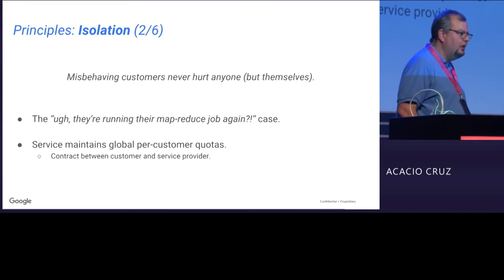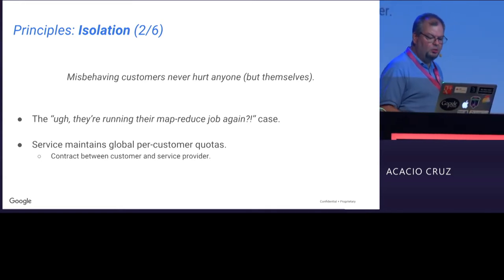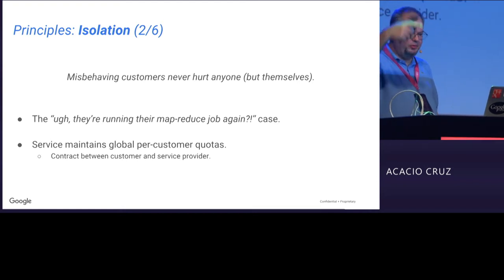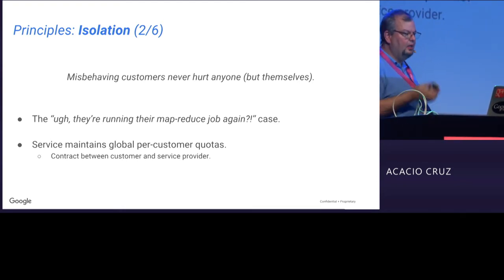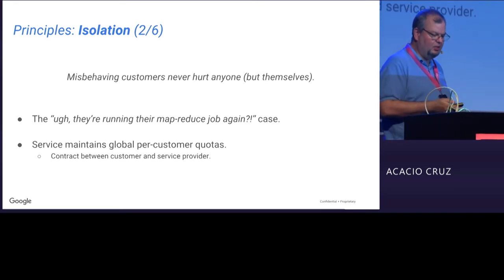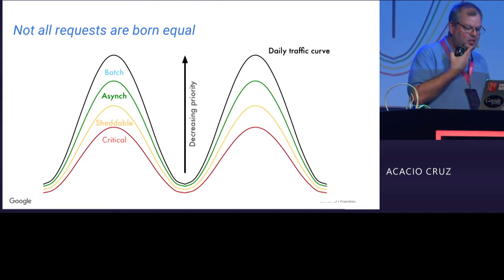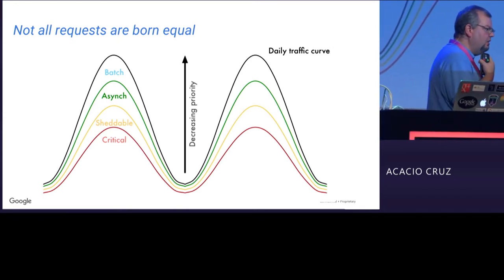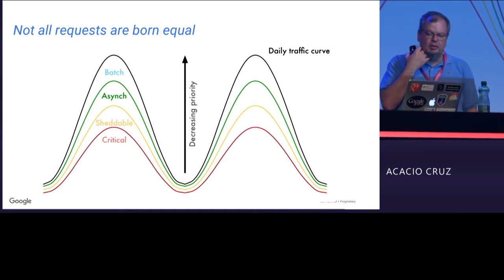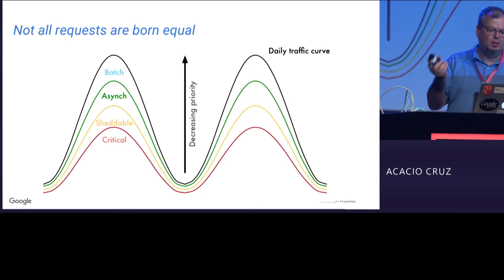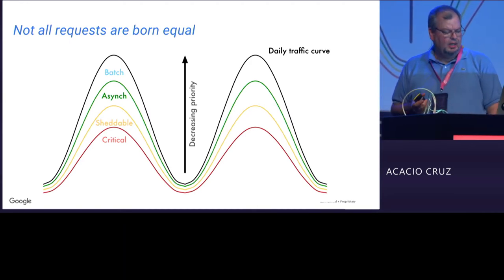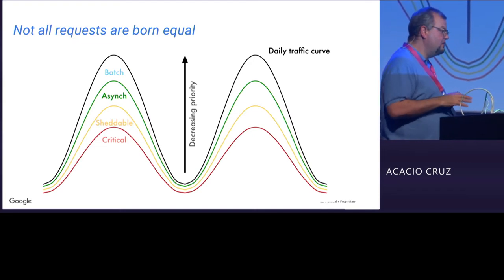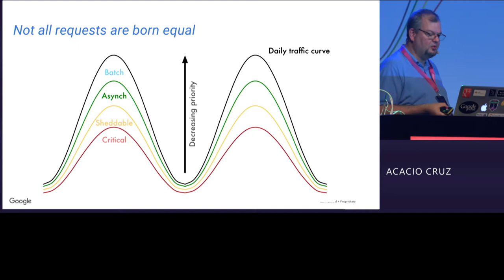Isolation is sort of obvious, hard to implement, but a principle we want to keep for all our services. Our services are built on top of other services, so we want isolation, quotas, and to maintain all of that. The third principle is criticality, which comes from the insight that not all traffic has the same importance. We've worked into four levels: critical traffic, sheddable traffic, asynchronous traffic, and batch traffic — pipelines, MapReduces, that sort of thing.